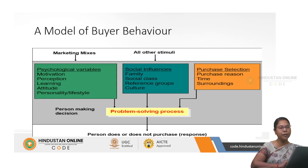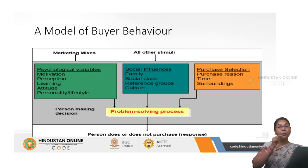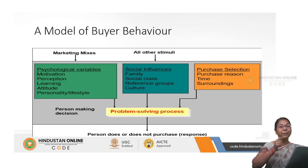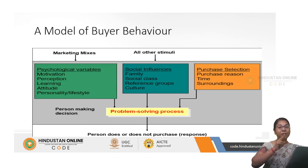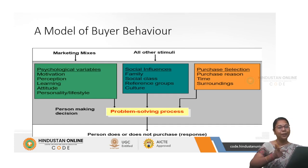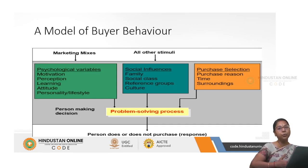Perception is the second attribute in psychological variables. What is perception? Perception is my level of understanding towards a particular product even before I actually go in for buying it. That is called perception.